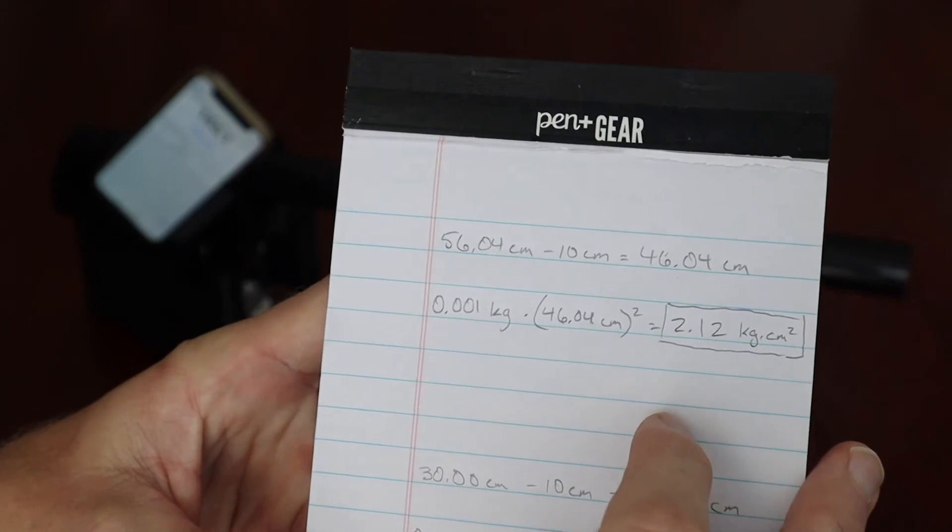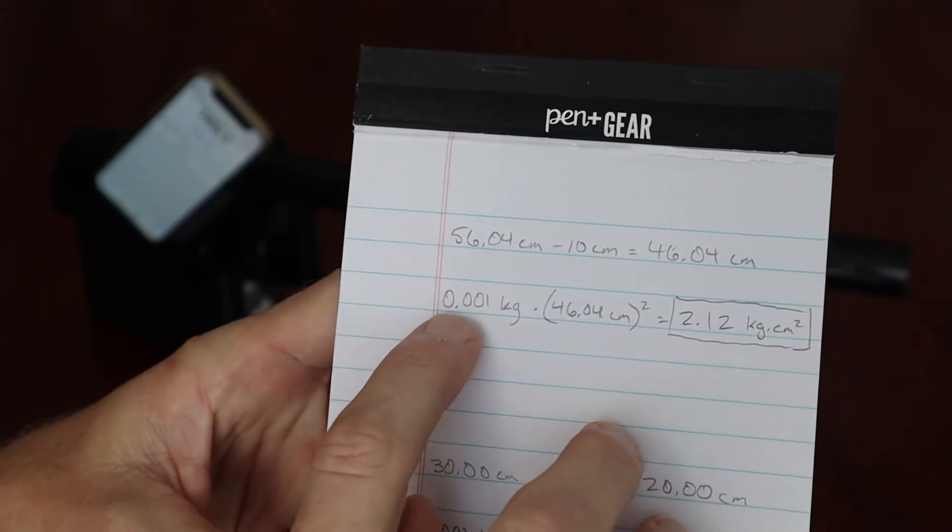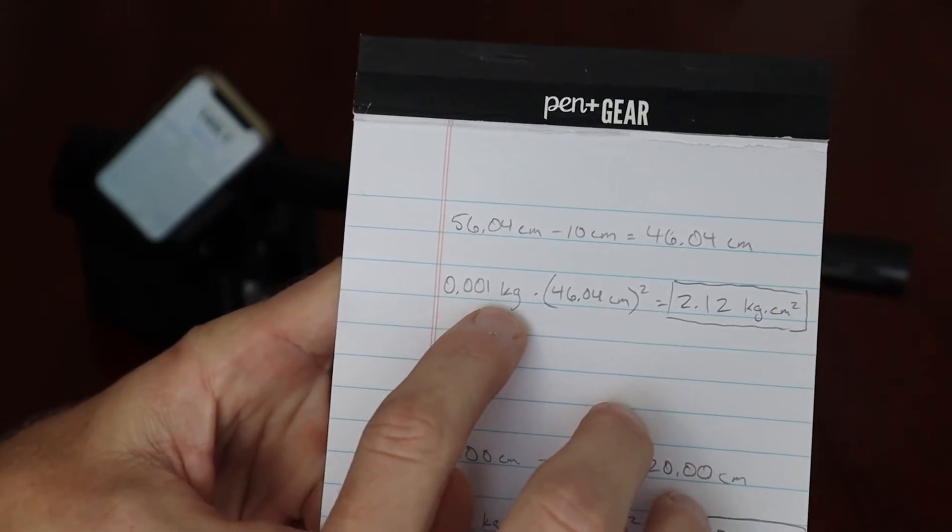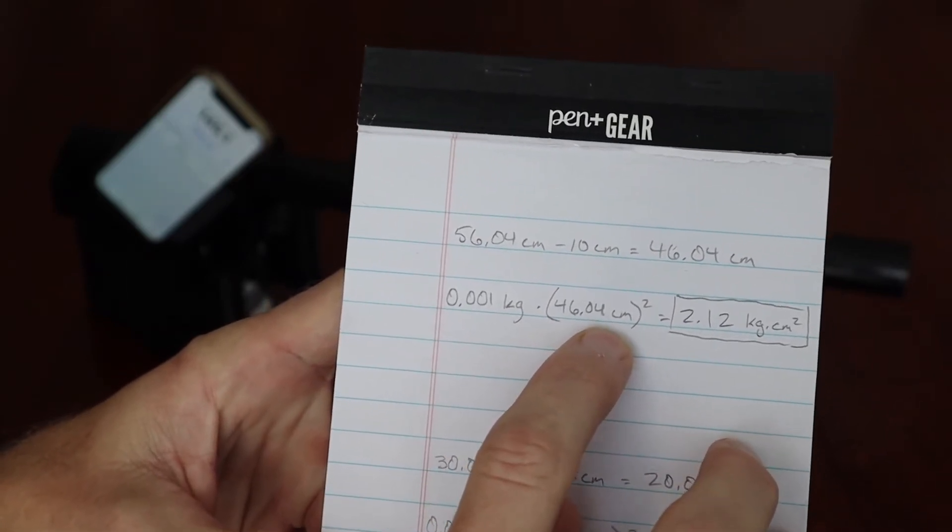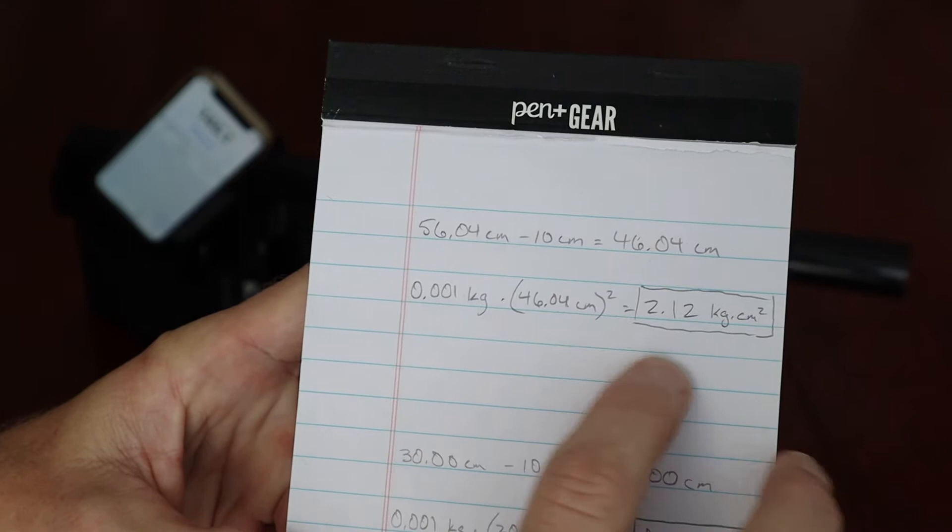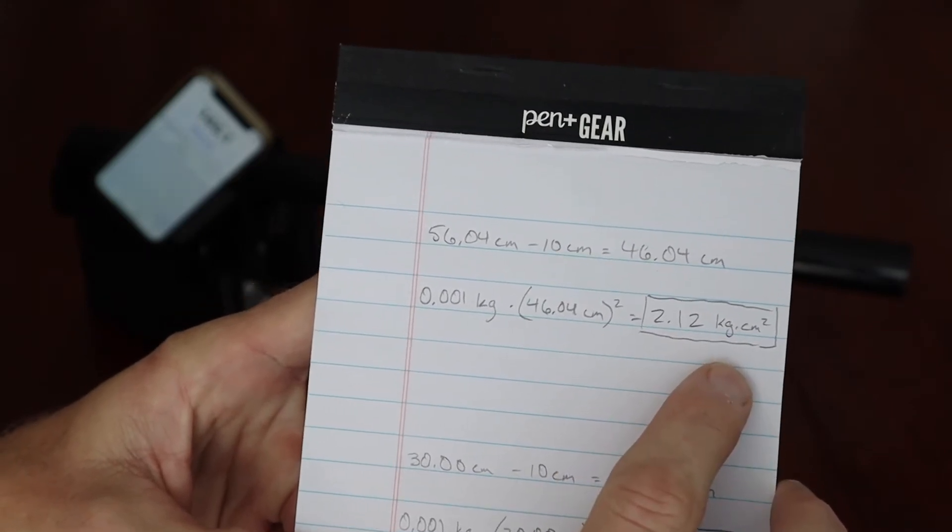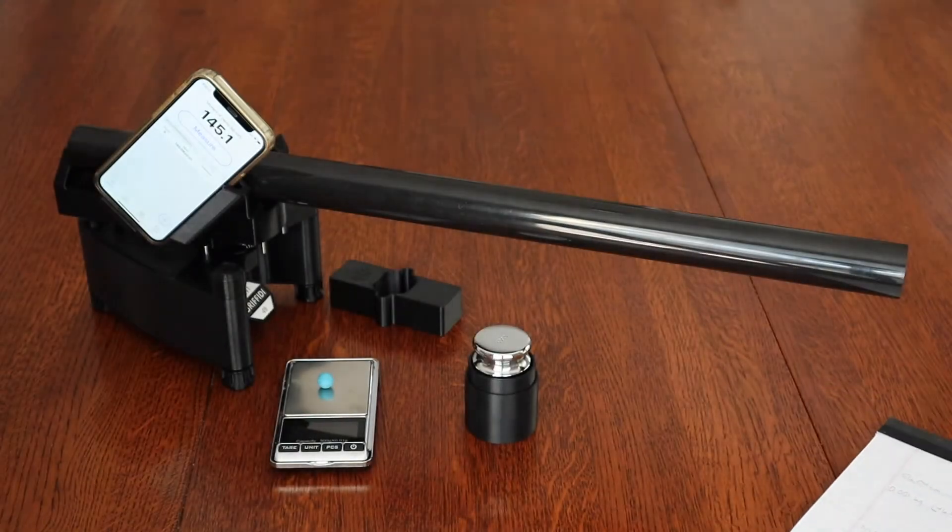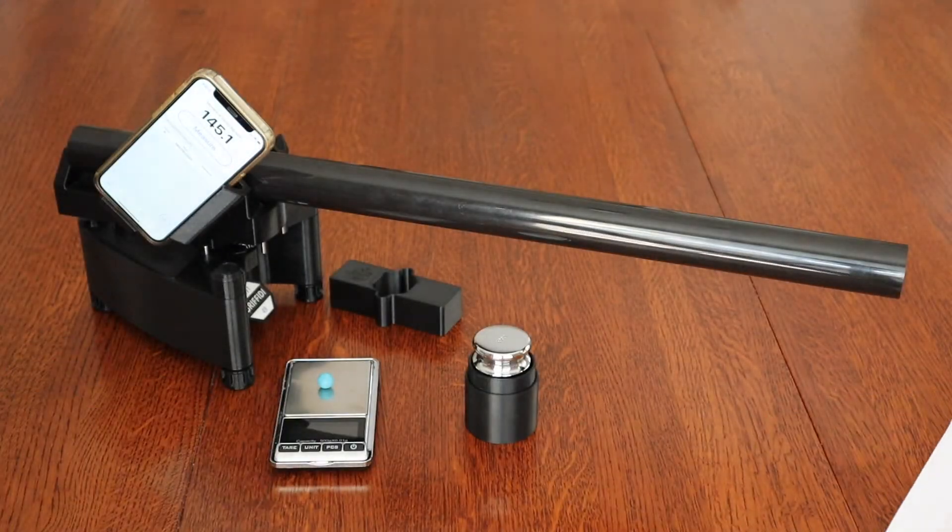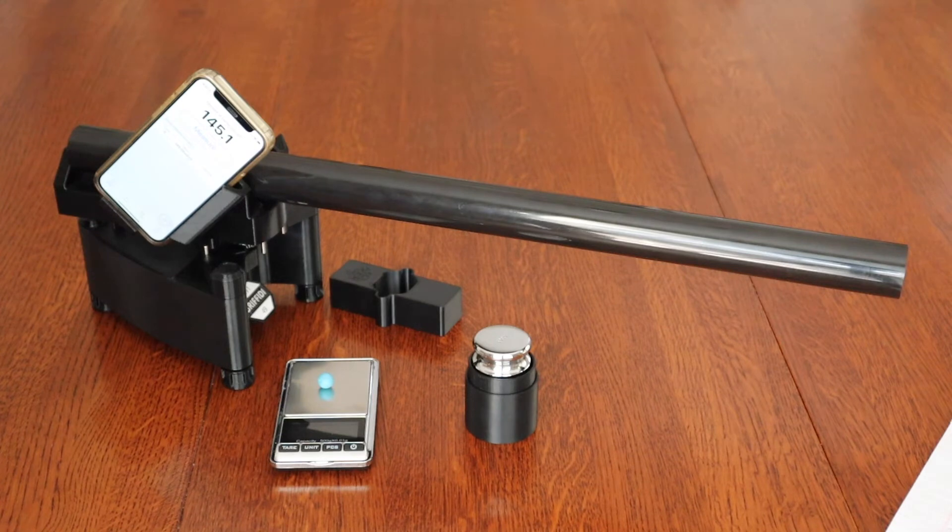And then to figure out the swing weight of one gram, that's 0.001 kilograms times that 46.04 centimeters squared. And that's 2.12 kilogram centimeters squared. So when I add that one gram to the end of it, I should see a difference of about 2.12 on the measurements.